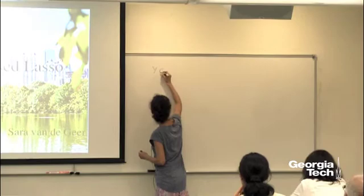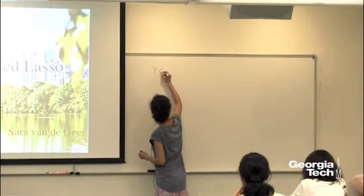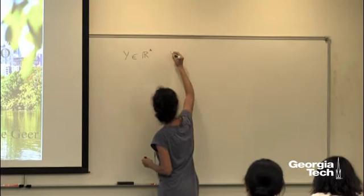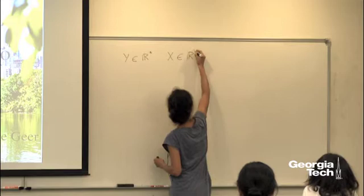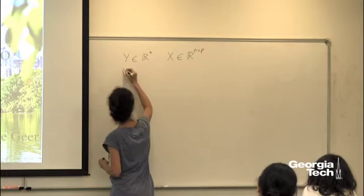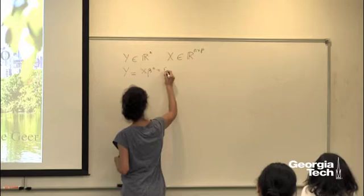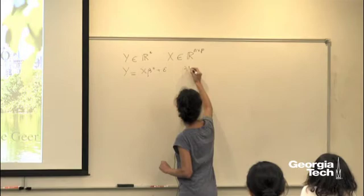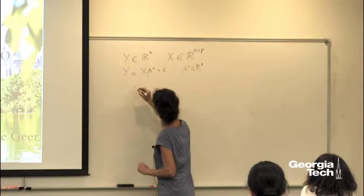We have, like on Tuesday — but don't worry, I'm not going to use the results there — a response variable y in n dimensions and the design matrix x of dimensions n times p. And the linear model, so y equals x beta plus error. The vector beta is unknown. And I'm going to assume for simplicity that the noise is standard Gaussian.